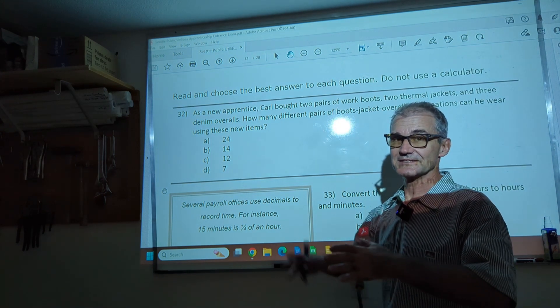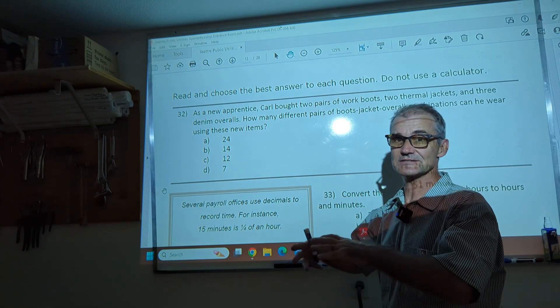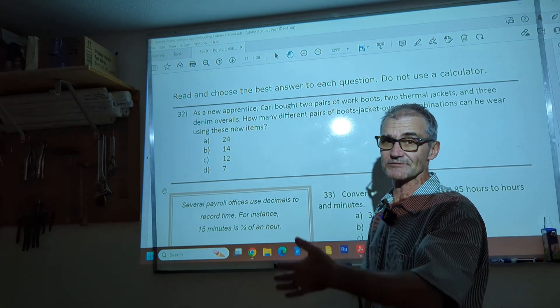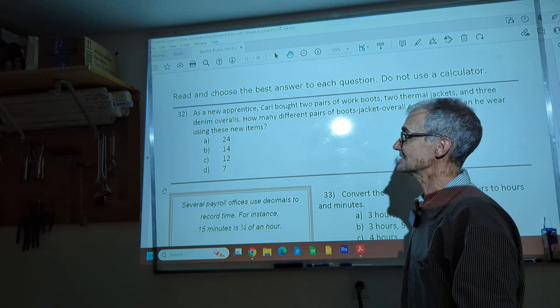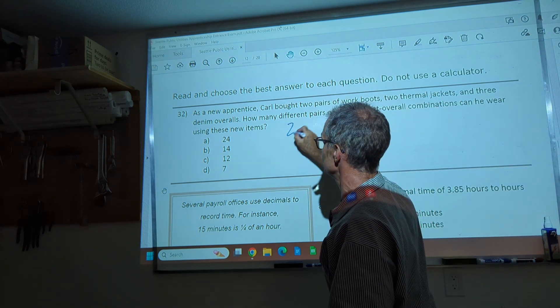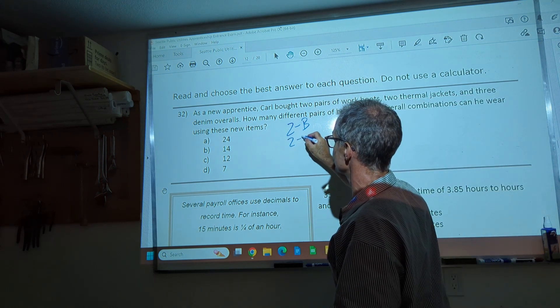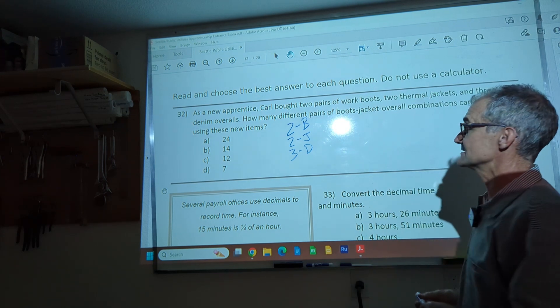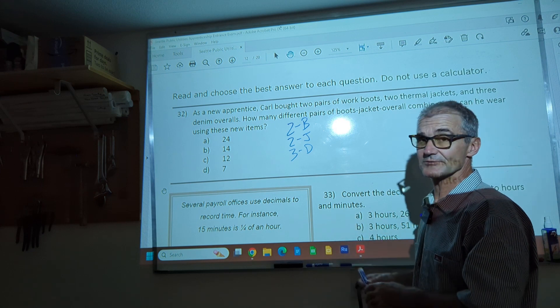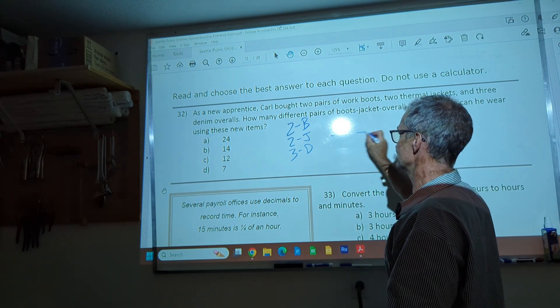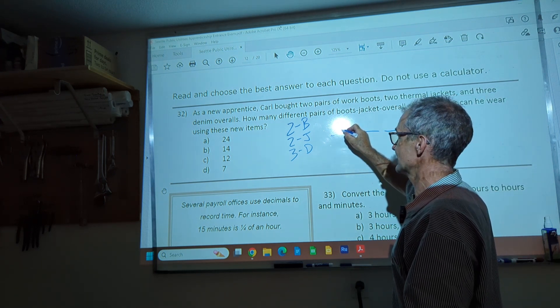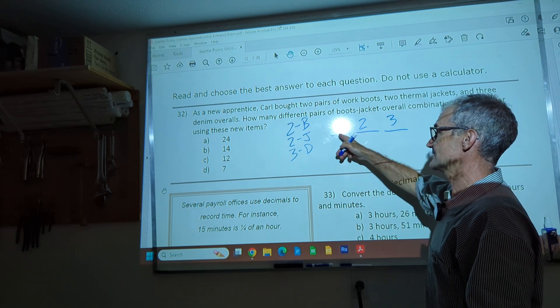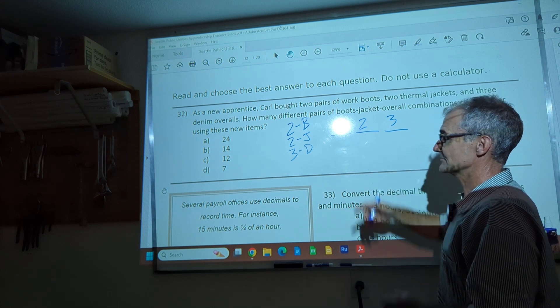I'll just see one more problem. This is a word problem. These are hard because it combines your reading comprehension with the math. The key on these things is break them down, put them into kind of like equations, lay out what you have, and go slow enough that you don't make any careless mistakes. So let's go ahead and do 32. Pause video, do 32, and watch how I do it. It's a new apprentice color block. Two pairs of boots, so I got two boots, two jackets, two thermal jackets, and three pairs of denim overalls. How many different pairs of boots, jacket, overall combinations can you wear using these new items? So the way this is a kind of a probability problem to figure out the number of ways. Kind of think of it as there are three slots. How many things could go in this slot? There are two possibility of boots, and then two possibilities of jackets, and then three possibilities of denims. So he, and then you multiply them together, you get 2 times 2 is 4, 4 times 3 is 12. Correct answer is C right there.